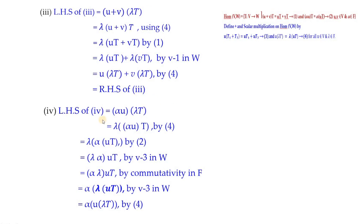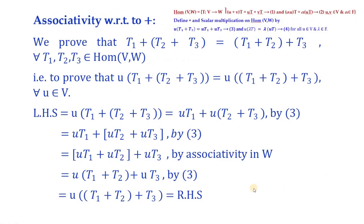For the fourth subdivision, considering α·u(λT) and using equation 4, then the second homomorphism condition for T, and axiom V3 in W, we proceed. Using commutativity of multiplication in F and then V3 in W again, and finally equation 4, we obtain the last step. This completes the closure proof. Next we check associativity with respect to addition.